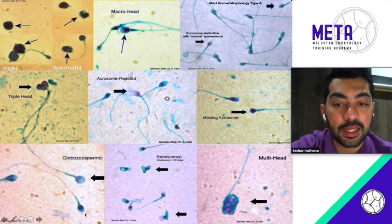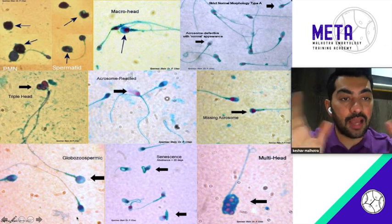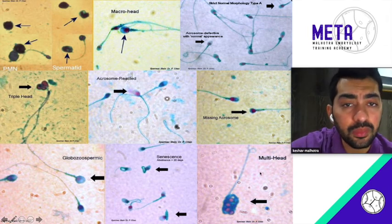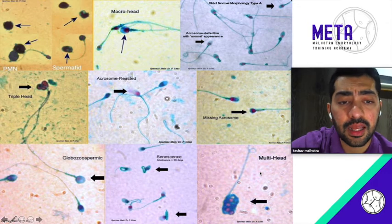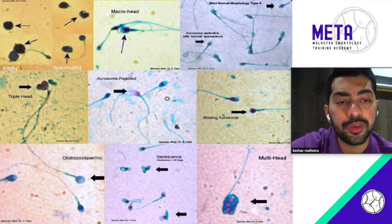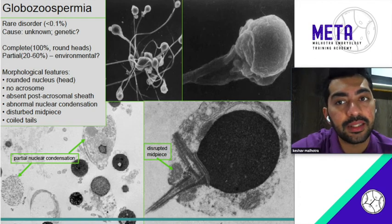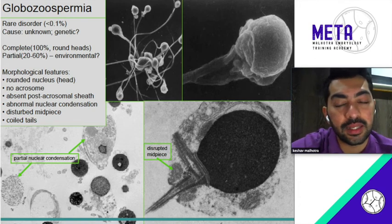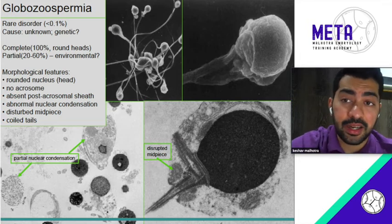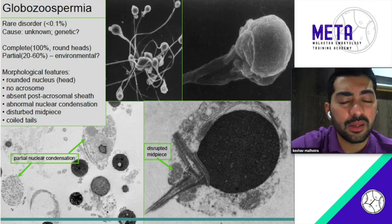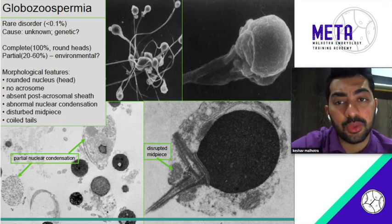Globozoospermia is basically when you do not have an acrosome and you have a round head. The main way of differentiating it is by electron microscopy, but you can also get hints about globozoospermia on sperm morphology analysis. It is a very rare disorder, occurring in less than 0.1% of patients seen in the clinic.